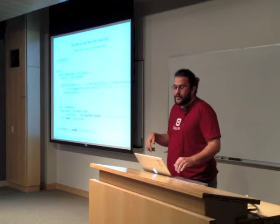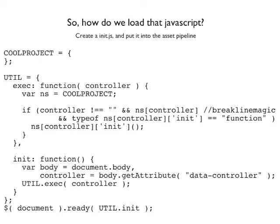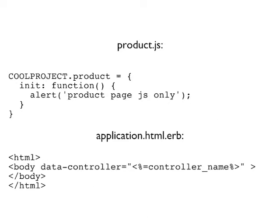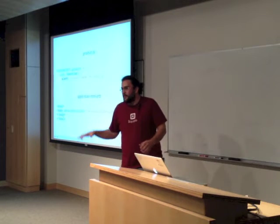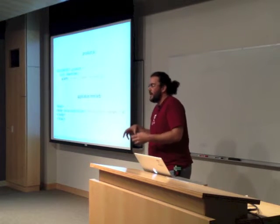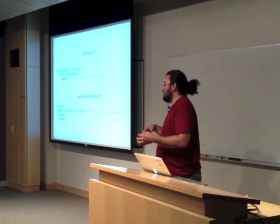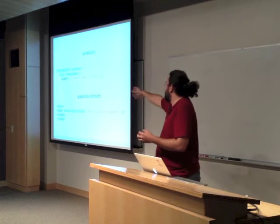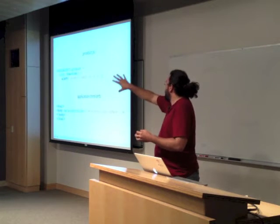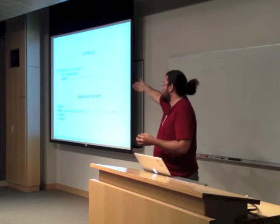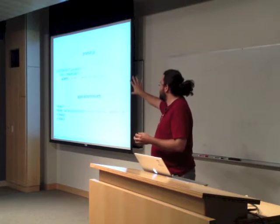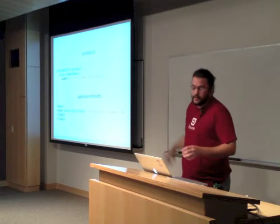This code by itself can never get executed. All I'm creating is a function that's going to be loaded into this variable — think of it almost like a hash. I'm creating a hash called 'cool project' that has a hash 'product' inside of it, that has a function in it that's sitting there and never gets executed.